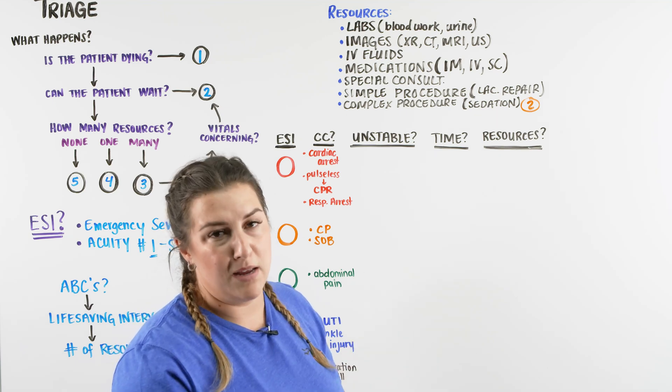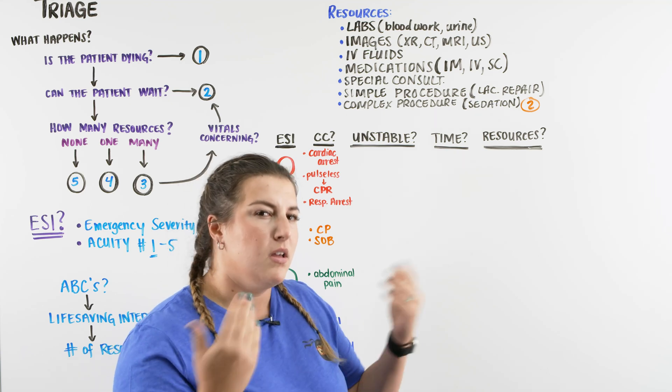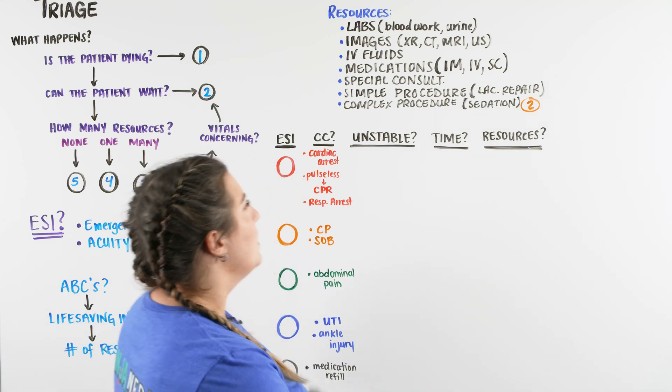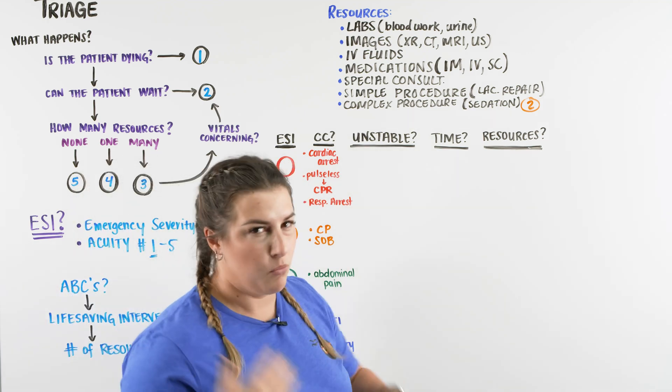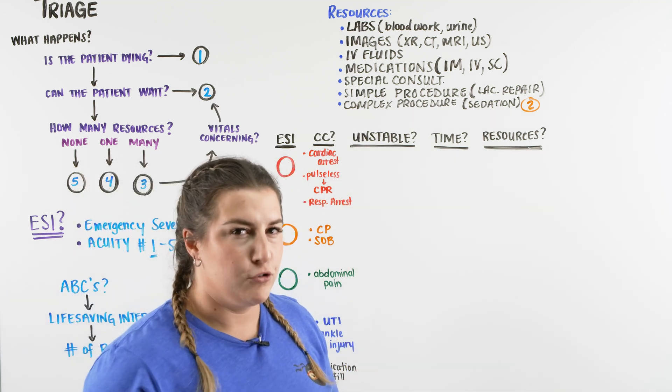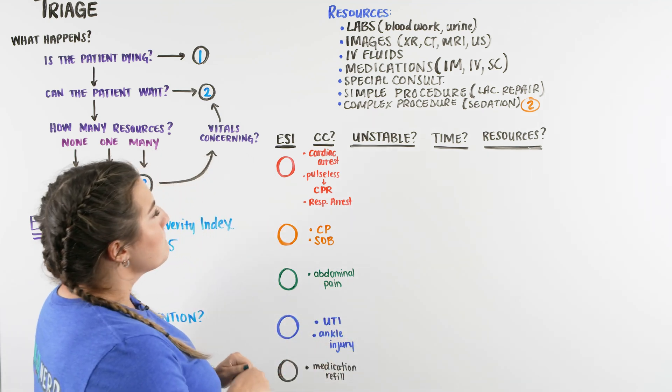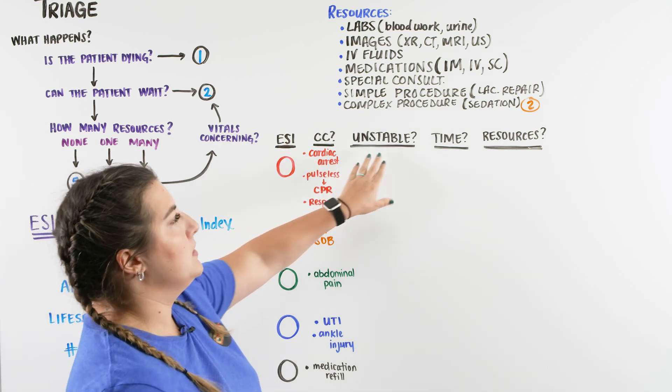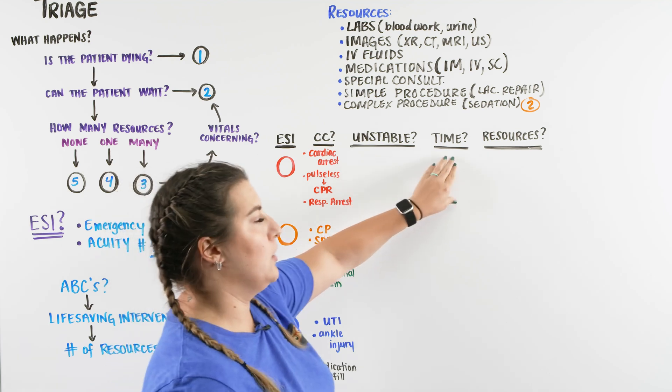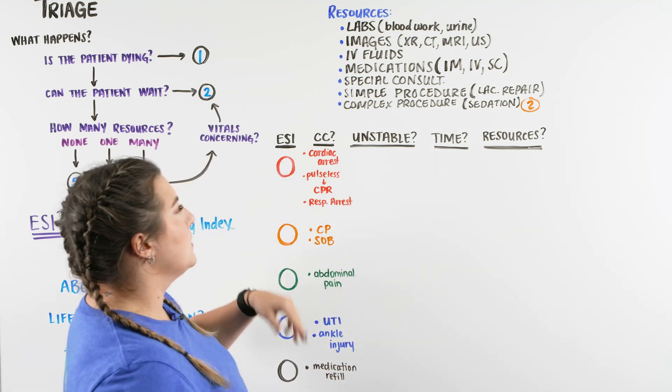And then if they need more because they're unstable, maybe they are tachycardic, and we're thinking they're going down a sepsis route, then they might be a two. So let's get into this little grid right here so we can hopefully understand what I'm talking about and how quickly the triage nurse works in the emergency room in order to assign the ESIs. So we have somebody coming in with an ESI, a chief complaint. We're going to decide if they're stable or unstable, how long can they wait, and how many resources they're going to need.